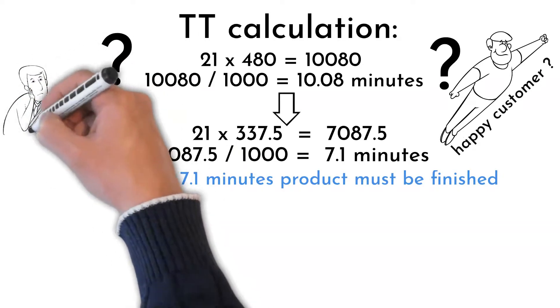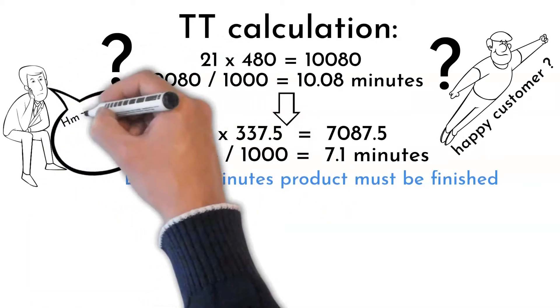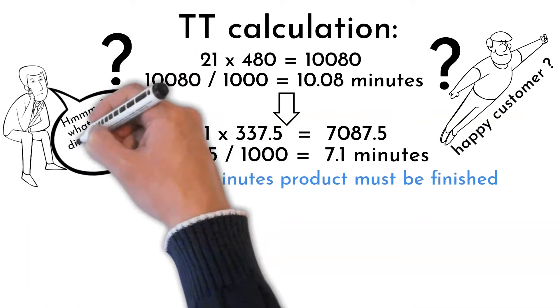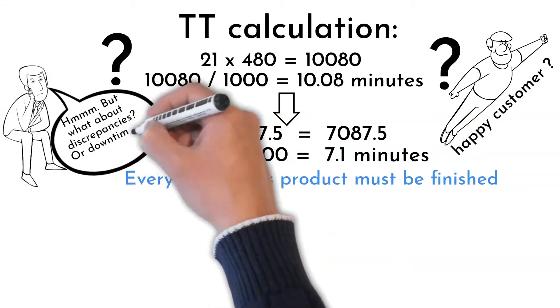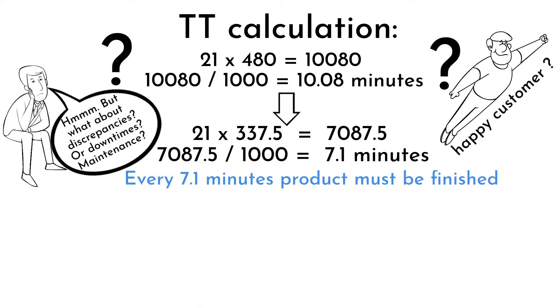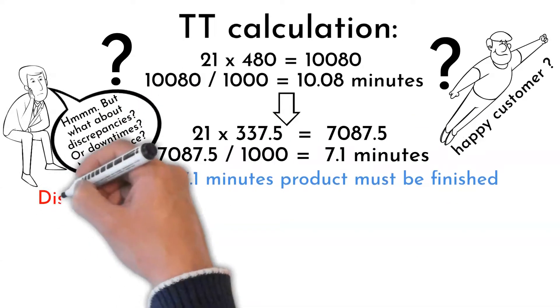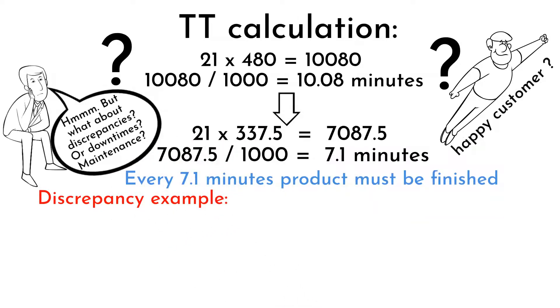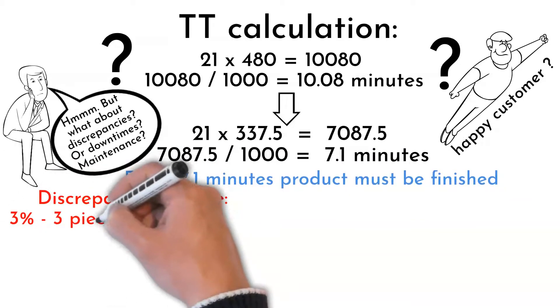But not always processes go smoothly. There are discrepancies, downtimes that occur and are affecting our processes. We must count also with regular maintenance. All these have to be subtracted from our calculation. Let's count with discrepancy only to make this example easier.